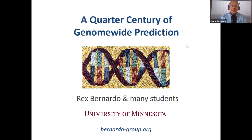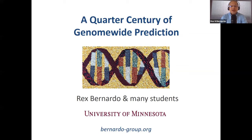I'd like to talk a little bit about a quarter century of genome-wide prediction. This is a bit of history — how this procedure, genome-wide prediction, genomic prediction, genome-wide selection, or genomic selection came about. It covers a little bit of work done primarily here at the University of Minnesota and a little bit of looking forward as well.